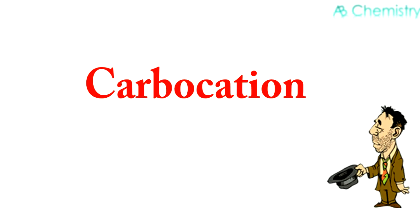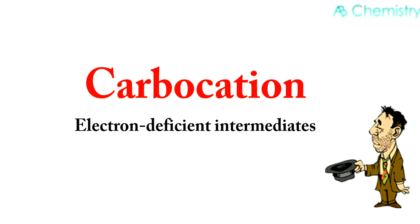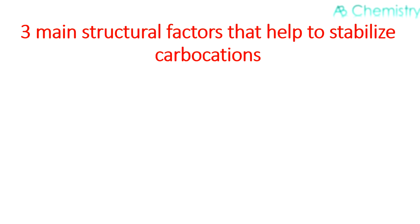Let's go into the presentation. What is a carbocation? If electrons were money, carbocations would be the beggars in organic chemistry. Yes, they are the electron-deficient intermediates, and reactions involving carbocations are nothing but giving them money or electrons through the change of electrons. There are three main structural factors that help to stabilize carbocations.